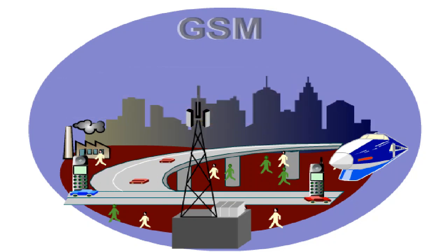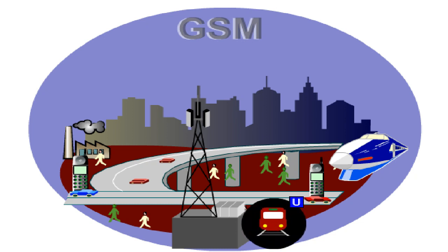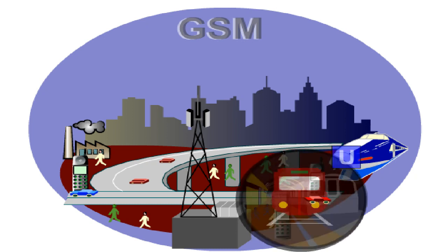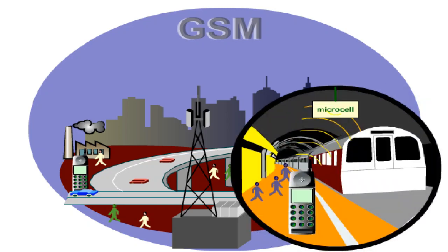In order to supply areas with a large number of mobile phone users, so-called micro cells are used. For example, BTS with a low output are used in underground stations, taking over the radio supply on the platform or with special antennae in the subway tunnels.